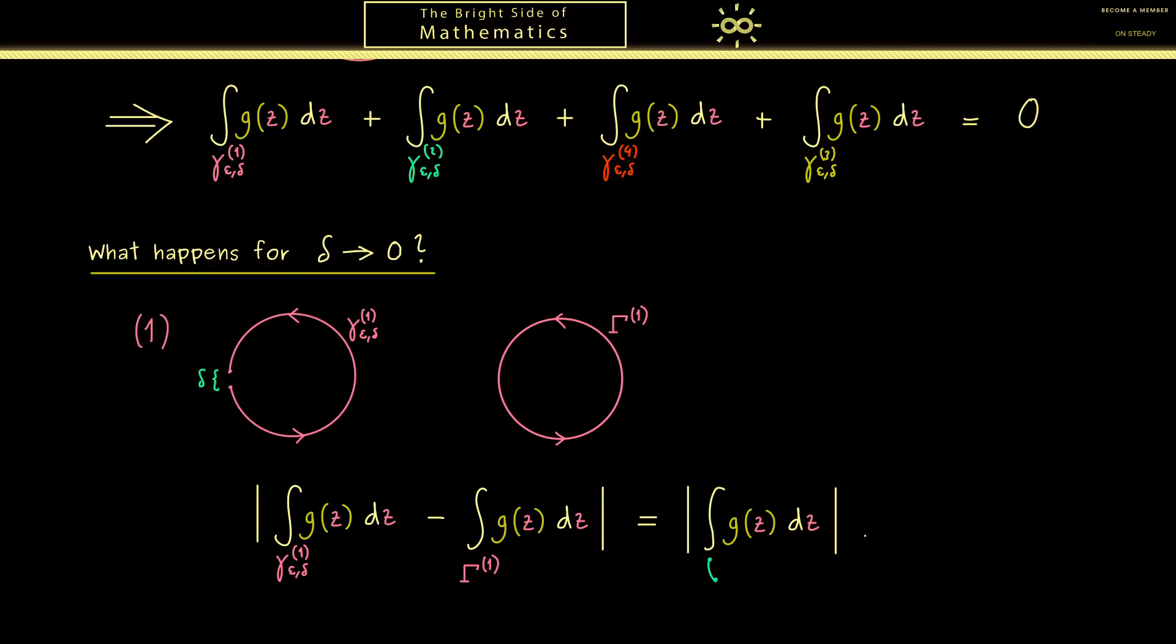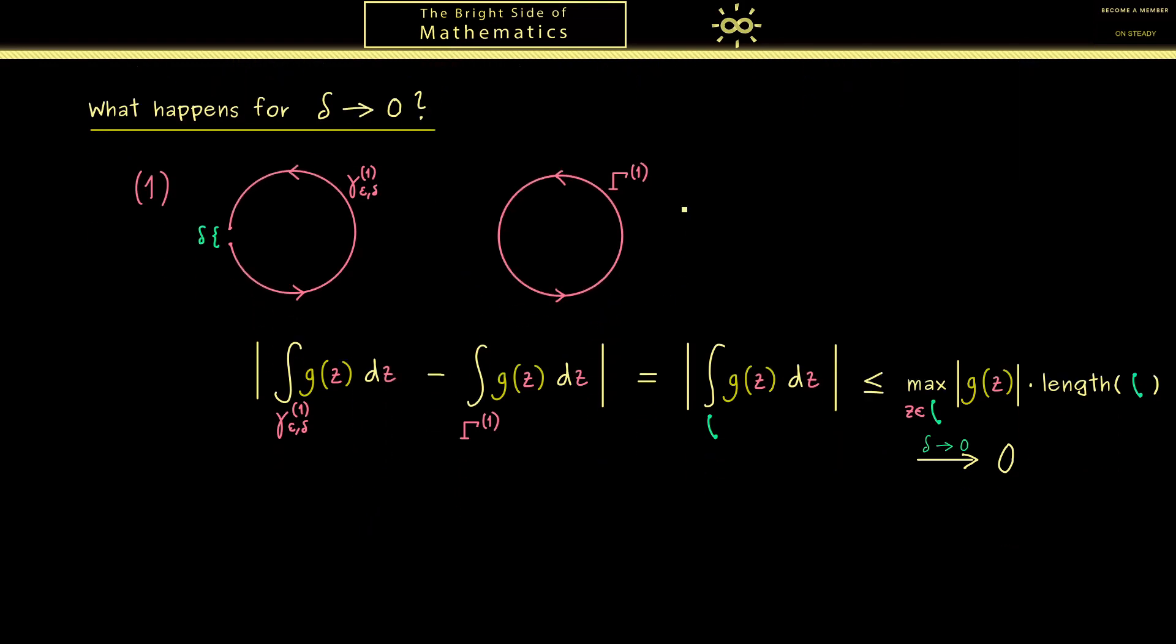We consider the absolute value between the one and the other one. We simply know this is the absolute value of a new contour integral, namely the contour integral along this small line there. We can immediately do the standard estimate, which is given as the maximum of the absolute value of g of z, where z goes through the curve, times the length of the curve. It should be obvious that this length goes to 0 when delta goes to 0. So the whole thing goes to 0. This is very important because it means for the limit delta to 0, this integral here goes to this integral. In other words, in the limit we are able to use the full circle.